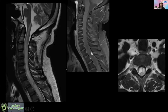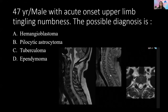Now this is the second question. You can see sagittal T2, post-contrast T1, and axial images on your screen. What is your possible diagnosis? The patient is a 47-year-old male with complaints of acute-onset upper limb tingling and numbness.